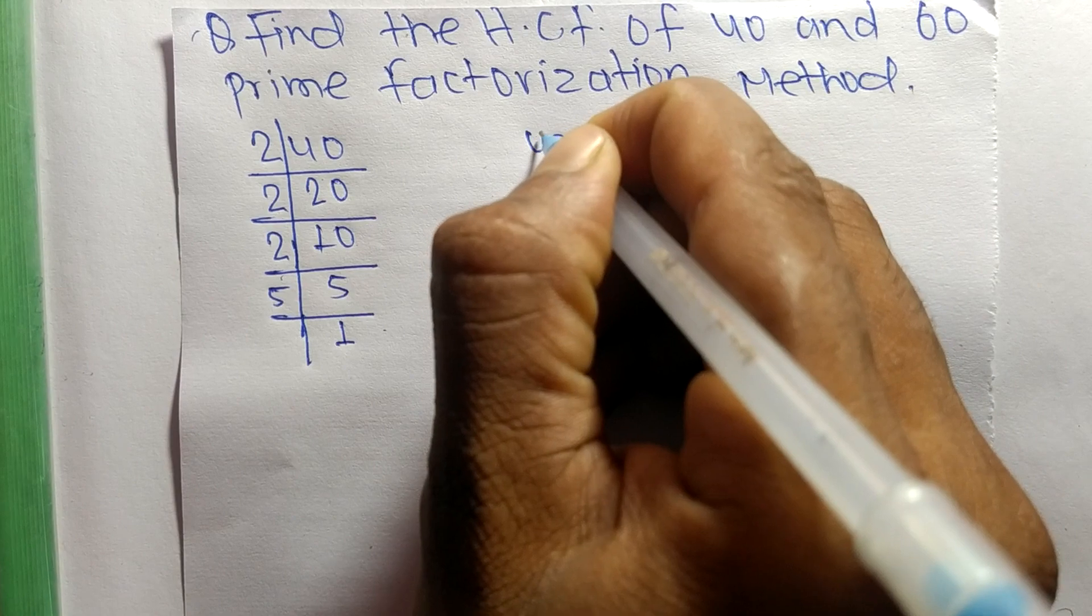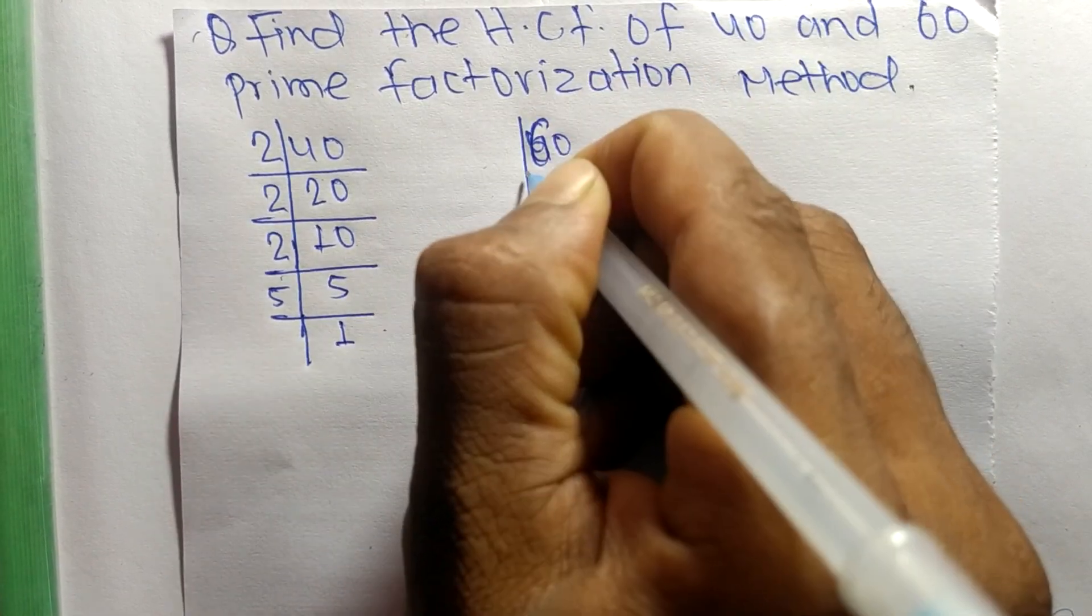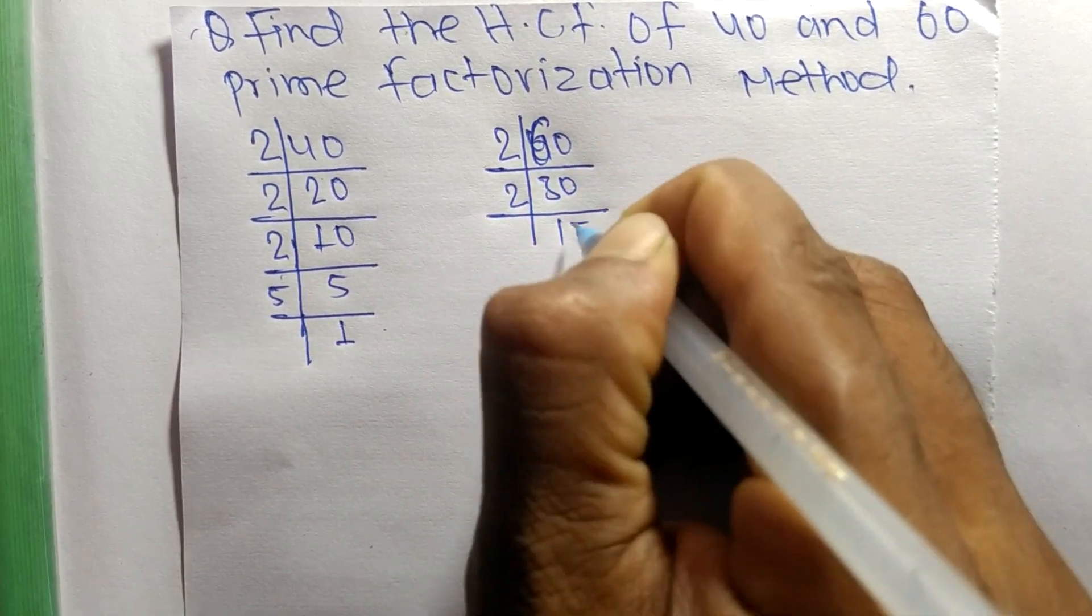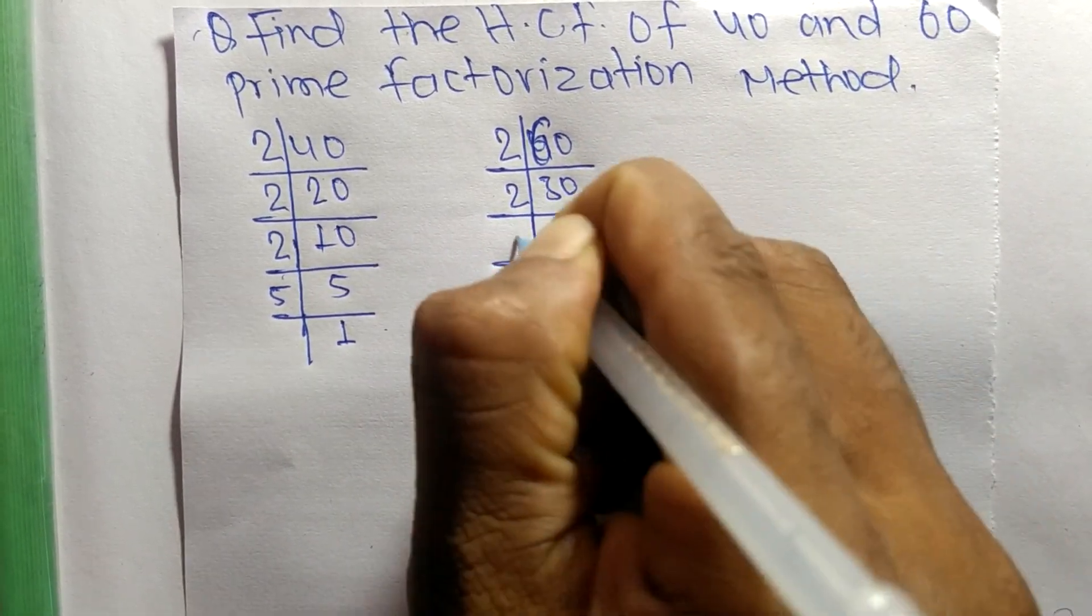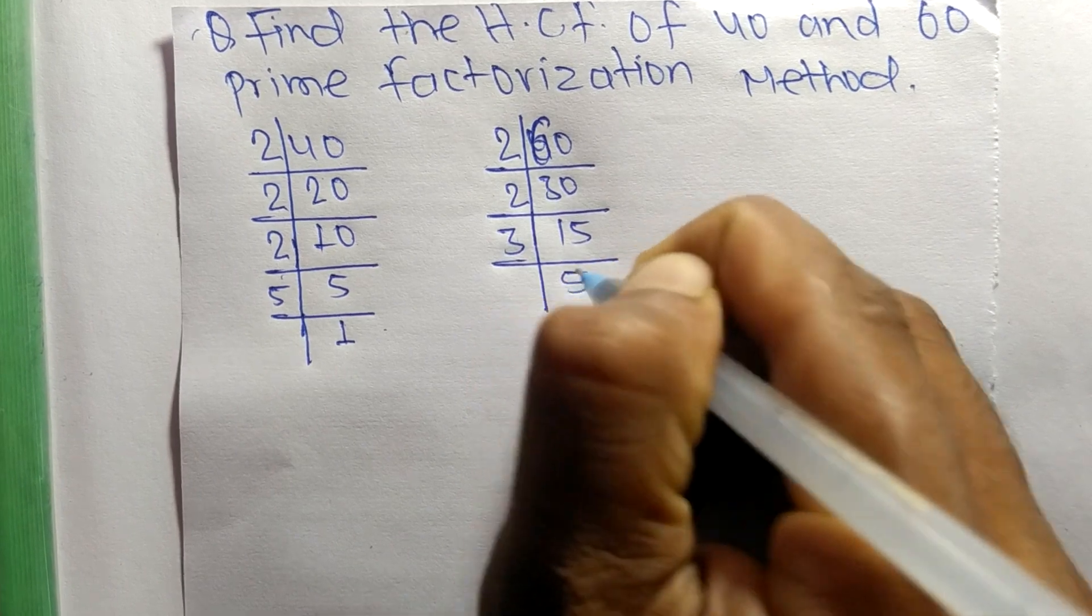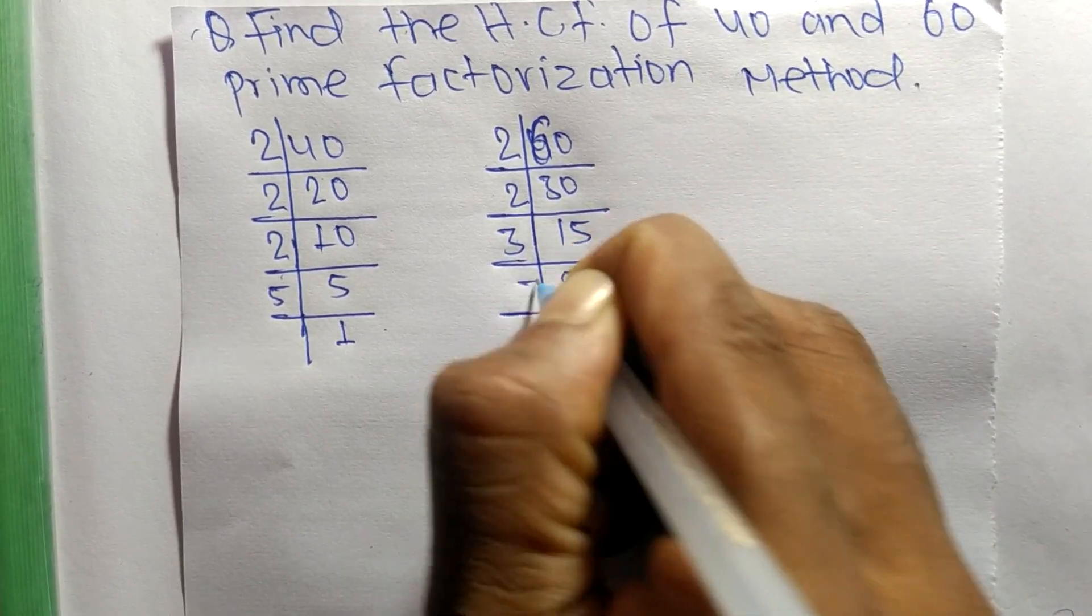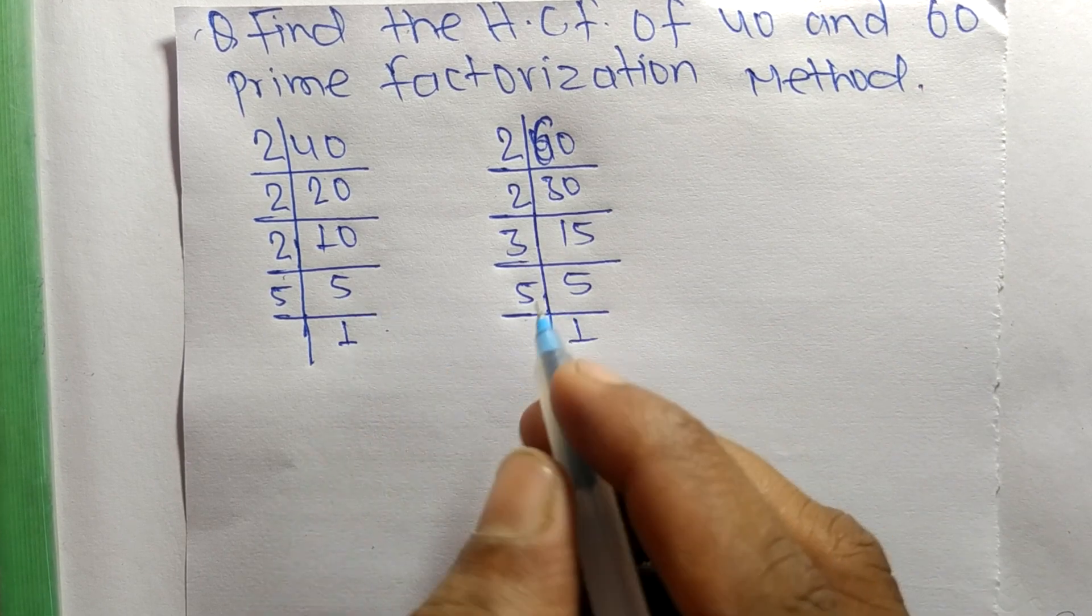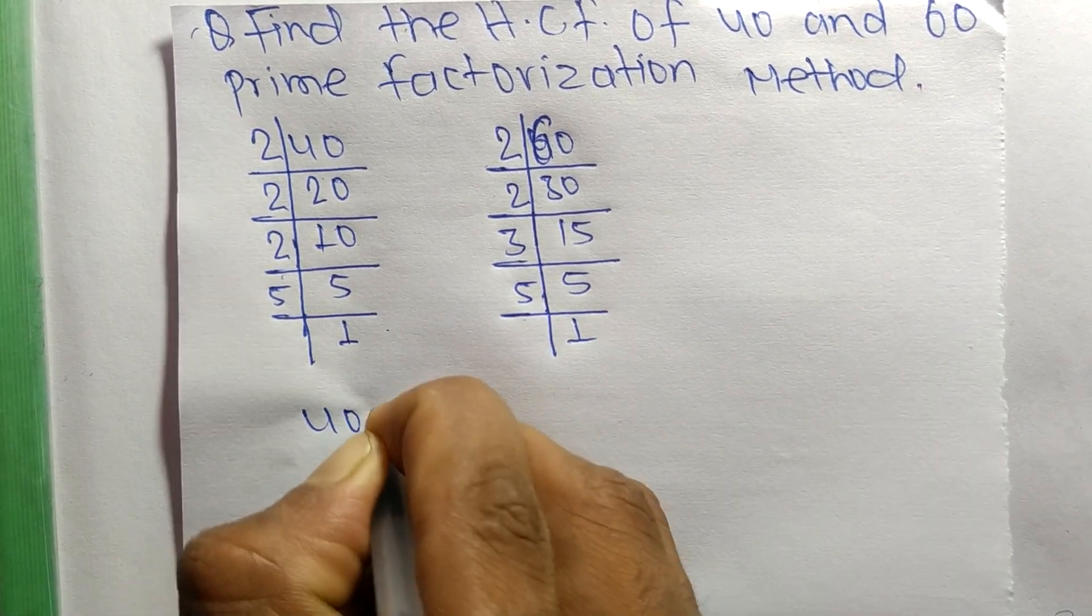The prime factors of 60 are: 2 times 30 equals 60, 2 times 15 equals 30, 3 times 5 equals 15, and 5 times 1 equals 5.